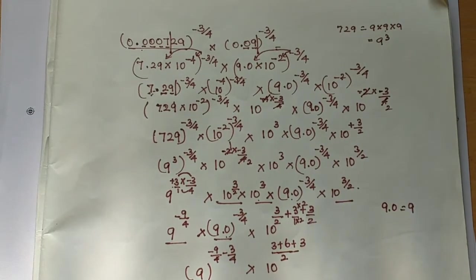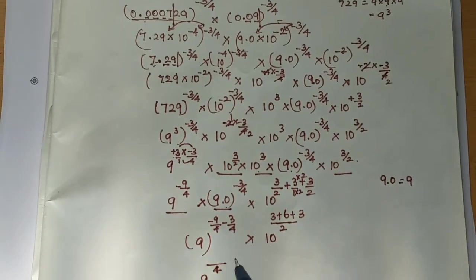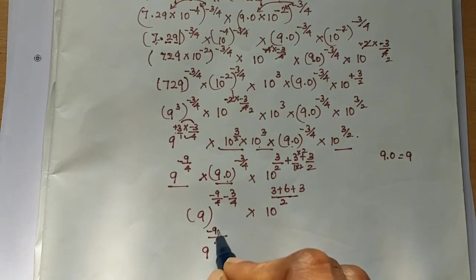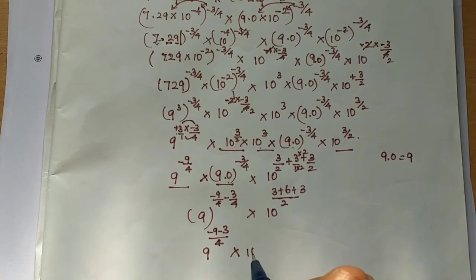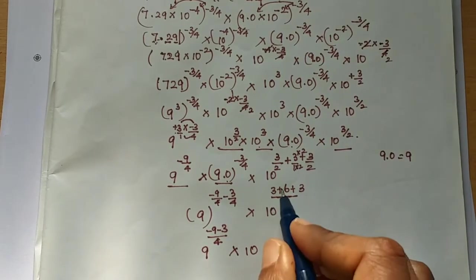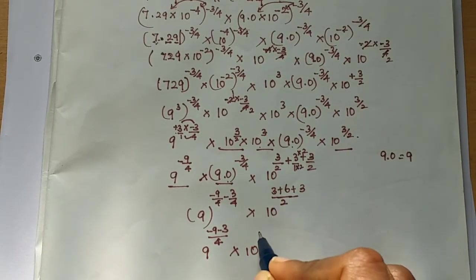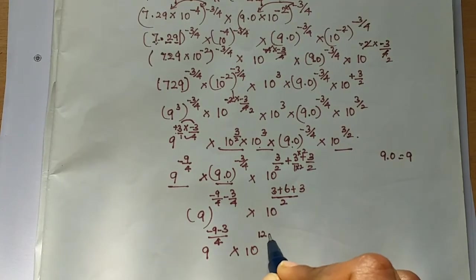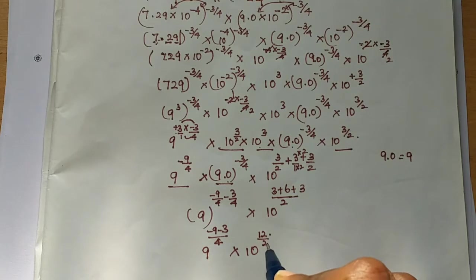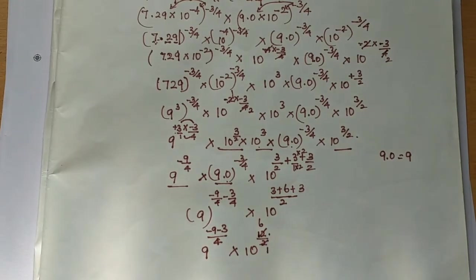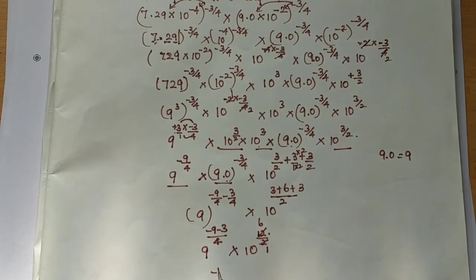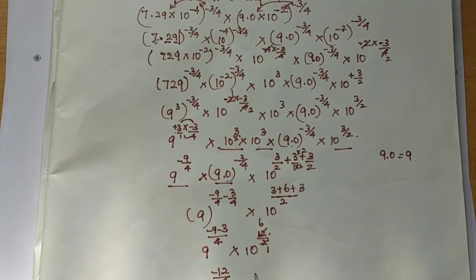So 9 power is equal to 4 — we put 4 in common — we put minus 9 minus 3. Into 10 power: 6 plus 3 is 9, 9 plus 3 is 12, so 12 by 2. Cancel — so 9 power minus 12 by 4, into 10 power 6.